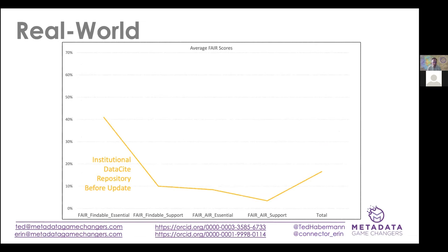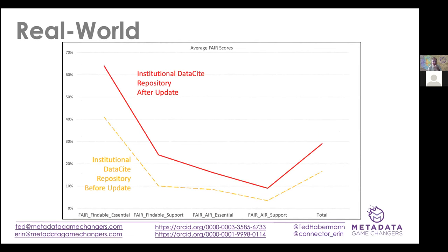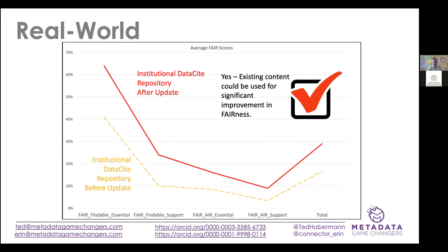In the real world, this is one of those institutional Datacite repository plots before an update. After the update, the metadata in Datacite for this institutional repository was increased — completeness with respect to these FAIR items was increased. We built a tool for extracting information from the institutional repository, transferring that content into Datacite, and had significant increases in fairness. The answer is yes — we can use existing content to improve the fairness of the global research infrastructure in Datacite for these datasets.